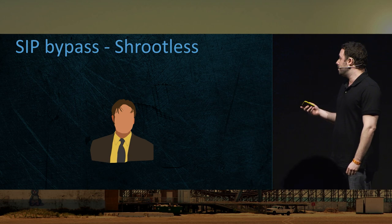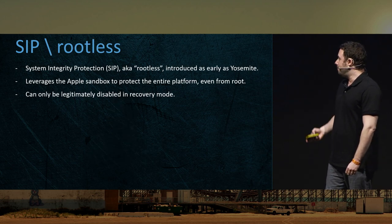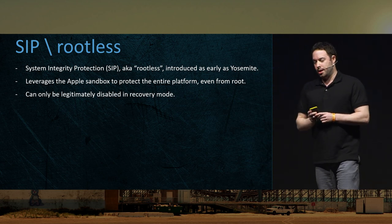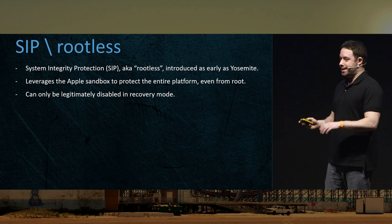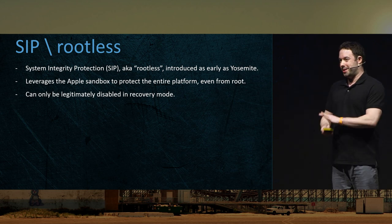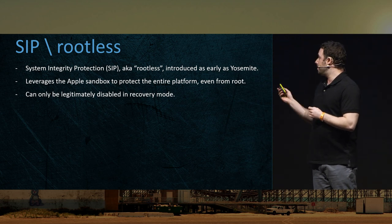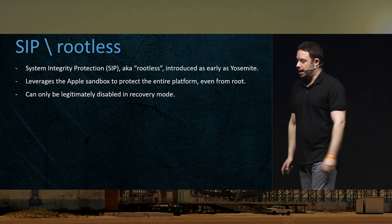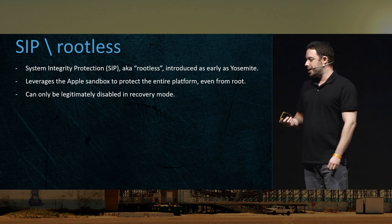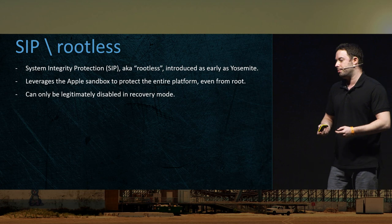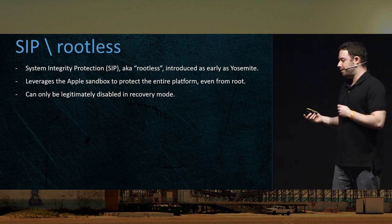I want to talk about my first vulnerability — a SIP bypass called Shrootless. SIP is System Integrity Protection. As the name suggests, it protects the integrity of the system, even from root — that's why it's also called rootless. It was introduced in Yosemite and leverages the Apple sandbox on the entire platform, even from root. I see it as the equivalent of SELinux, but on Mac.